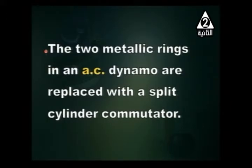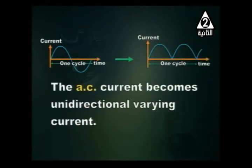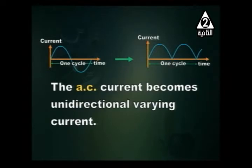What happens when the two metallic rings in an AC dynamo are replaced with a split cylinder commutator? The AC current becomes unidirectional but varying. As shown, the AC current becomes unidirectional — it has one direction but is still changing; it swings from zero to maximum.